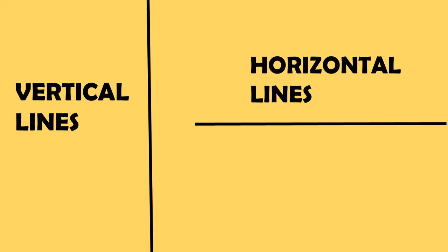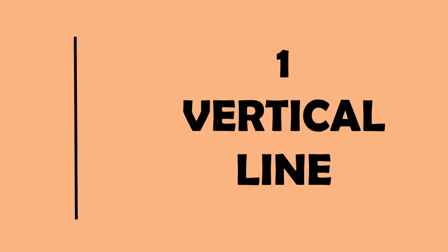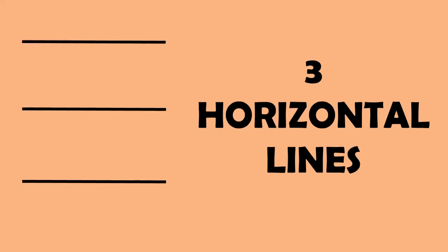Now, let us see different alphabets and count the number of horizontal and vertical lines each has. This is E. Students, can you tell me how many horizontal and vertical lines it has? Yes, you all are right. It has one vertical line and three horizontal lines.